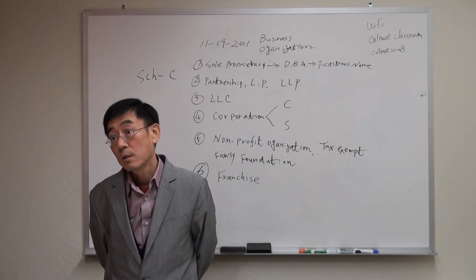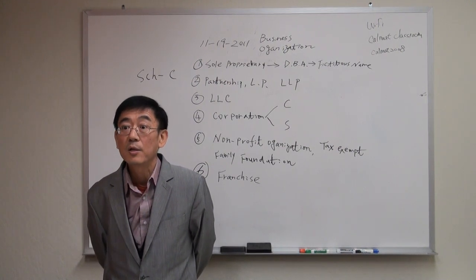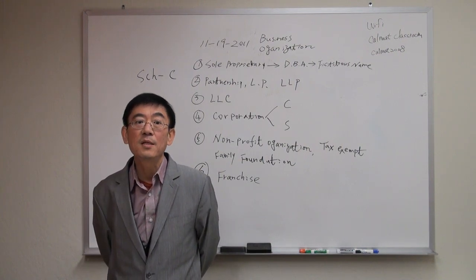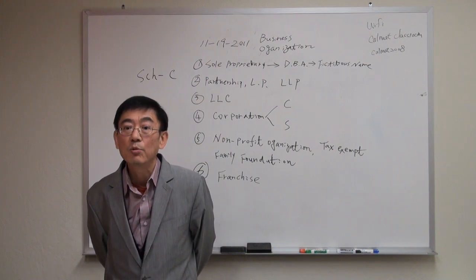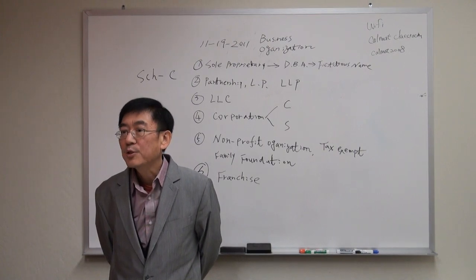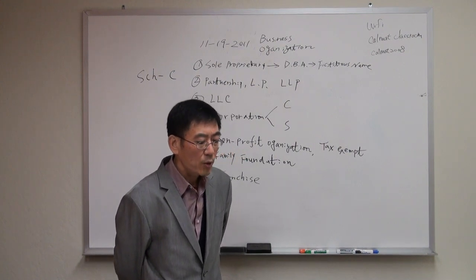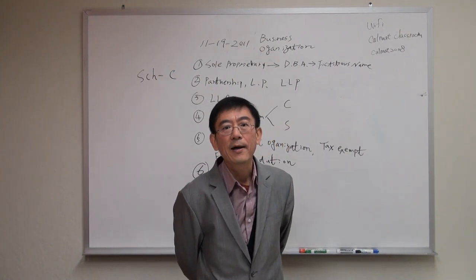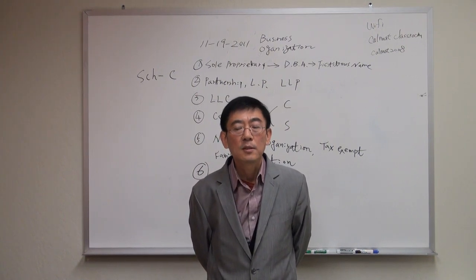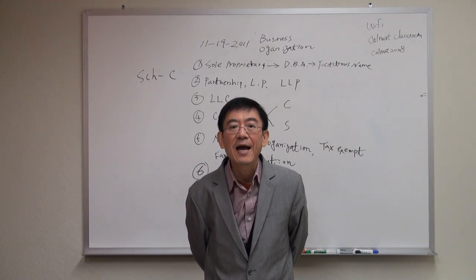This is for state level. Regular corporation, some people say stock corporation, or professional corporation, or non-profit corporation. Usually we only talk about regular corporation here. For business purposes, we just go to the state to file the stock corporation. Once you've done that, then you make your decision whether or not you want to file the form to IRS to tell the IRS you want to have this corporation recognized as S corporation or C corporation.